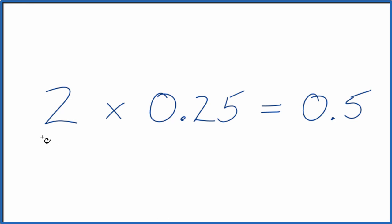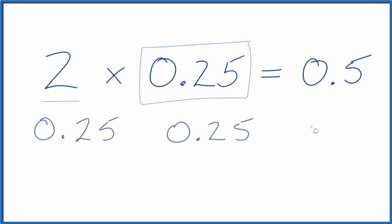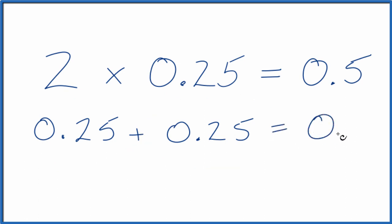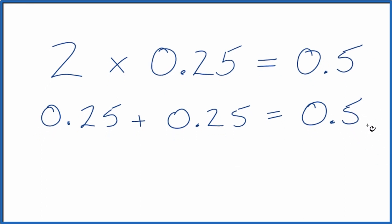You could also think about this. You have two of these 0.25s. So we could just say 0.25 plus 0.25, and there's our two 0.25s, and just add them together. Again, we get 0.5. You might get 0.50, but that's the same thing.